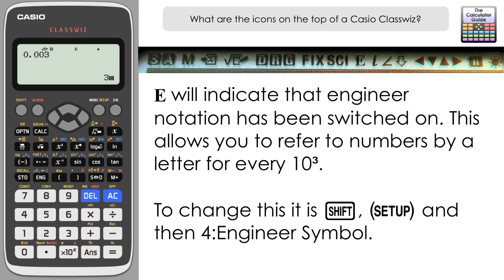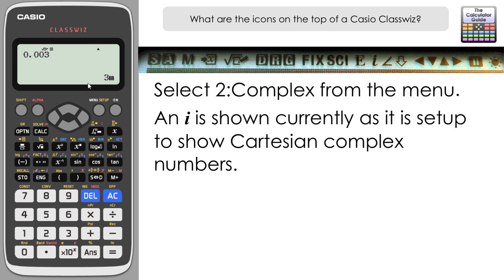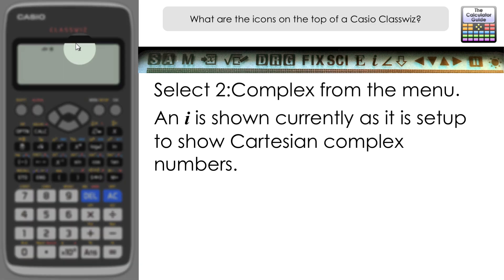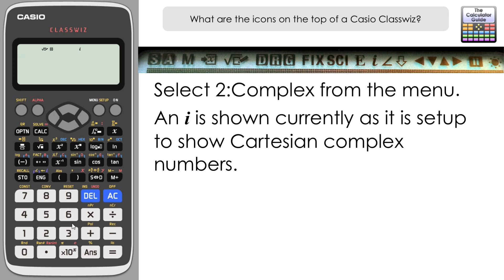The next icon is an i, indicating an imaginary number. To use this we need to enter complex mode on the ClassWiz. First I'll switch engineer symbol off — there, the E is gone. Going to Menu then Complex, you can see the i is displayed, firstly indicating we're in complex mode and secondly indicating the display form, which is rectangular or Cartesian form. For example, inputting 4 plus 3i and pressing equals gives the result back as a Cartesian form complex number.